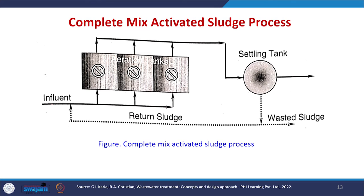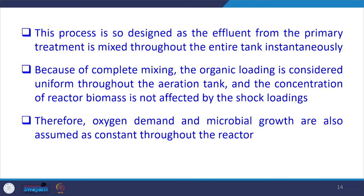In the completely mixed sludge system, the influent is mixed with the return sludge and enters a reactor that is completely mixed. From the reactor the flow goes into the settling tank, where most sludge is wasted, some is recycled, and the treated effluent exits. The process is designed so that effluent from primary treatment is mixed throughout the entire tank instantaneously. Because of complete mixing, organic loading is considered uniform throughout the aeration tank, and oxygen demand and microbial growth are assumed constant throughout the reactor.